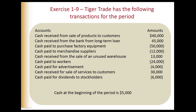Cash paid for the sale of an unused warehouse is $13,000. Cash paid to workers $24,000. Cash paid for advertisement $4,000. Cash received for the sale of services to customers $30,000. And cash paid for dividends to stockholders is $6,000. So we have various items that are receipts or disbursements — activities related to cash.